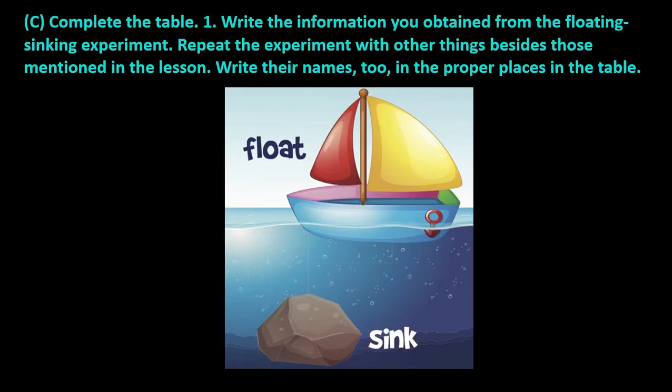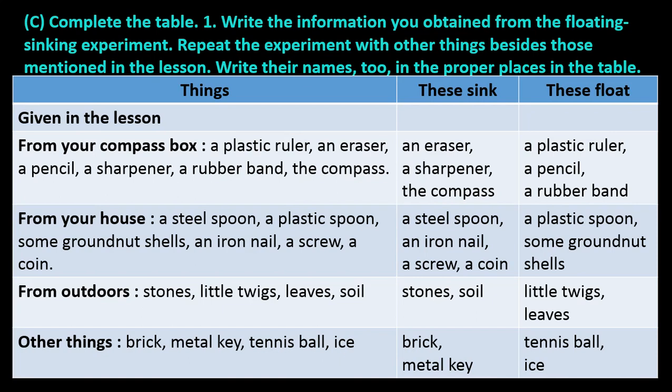Exercise question number C: Complete the table. Question number 1: Write the information you obtained from the floating and sinking experiment. Repeat the experiment with other things besides those mentioned in the lesson and write their names in the proper places in the table. First, let's discuss the things given in the lesson. From your compass box: a plastic ruler, an eraser, a pencil, a sharpener, a rubber band, and the compass.